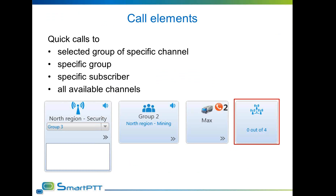There is also an option to create a broadcast call button, which will transmit an All Call on each existing channel in the radio network. This can be used in emergency situations when the dispatcher needs to notify all subscribers about something. The resulting call is an All Call, so subscribers will not be able to answer directly, but they can call back to the dispatcher for more information if needed.